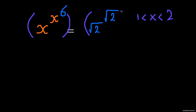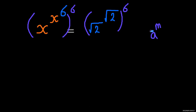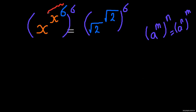We're going to raise both sides to the power of 6. Let me write the power rule we'll use: a to the power of m, again to the power of n — we can swap, putting n inside the parentheses and m outside. We're going to apply this trick, assuming that 2x to the power of 6 is m, and taking the whole thing out.